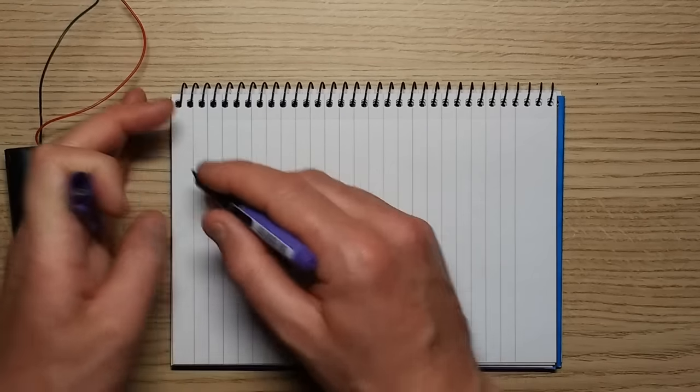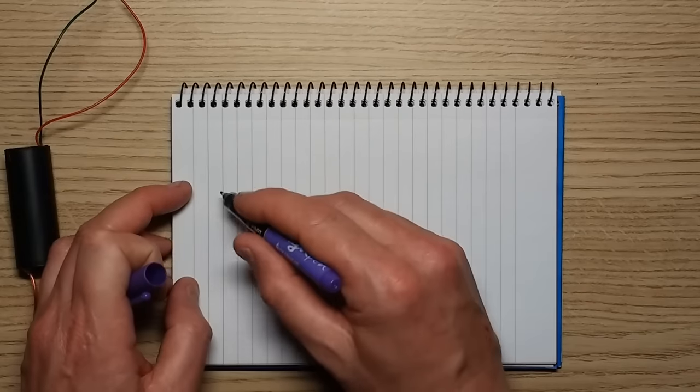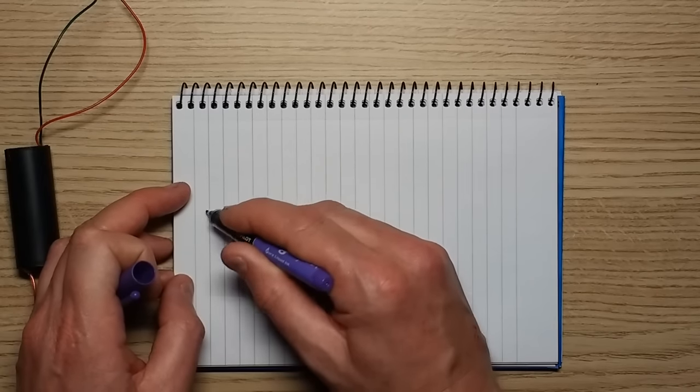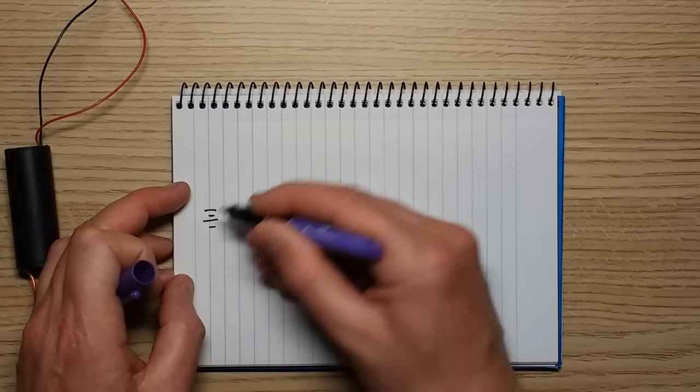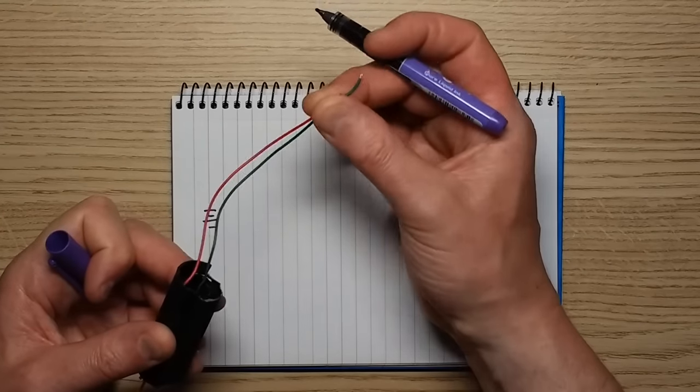So I analyzed the circuitry in the stun gun that I had bought, and it looked like this. You start off with the low voltage supply, which in this case will actually operate from 1.5 volts to about 3 volts.